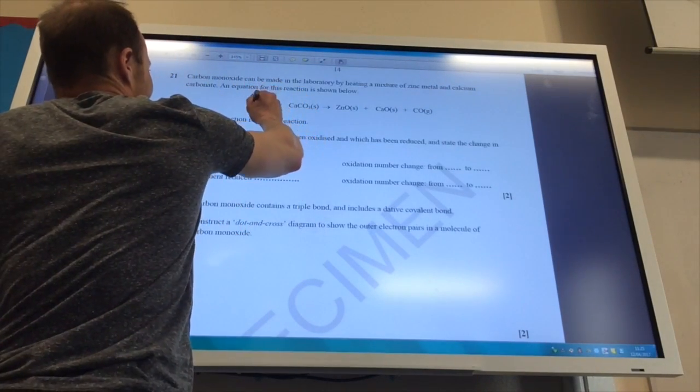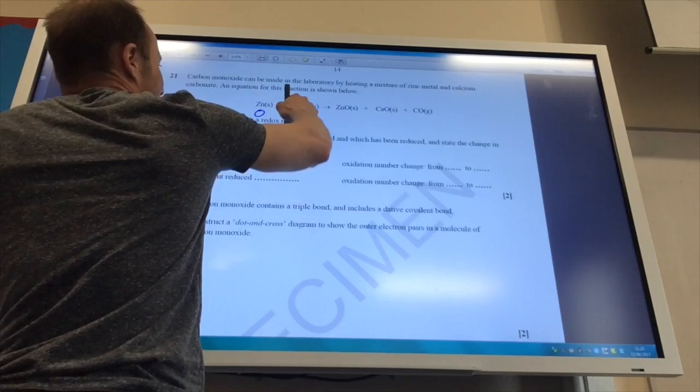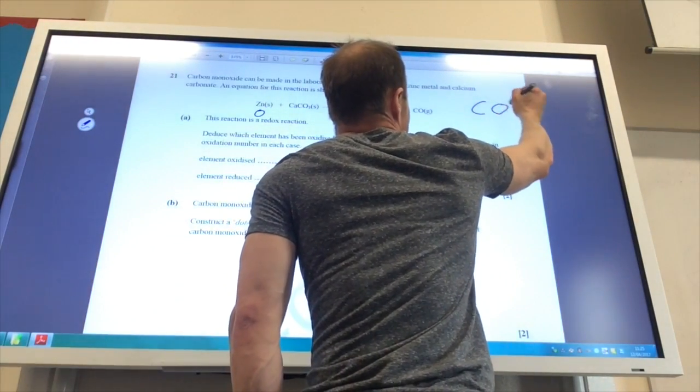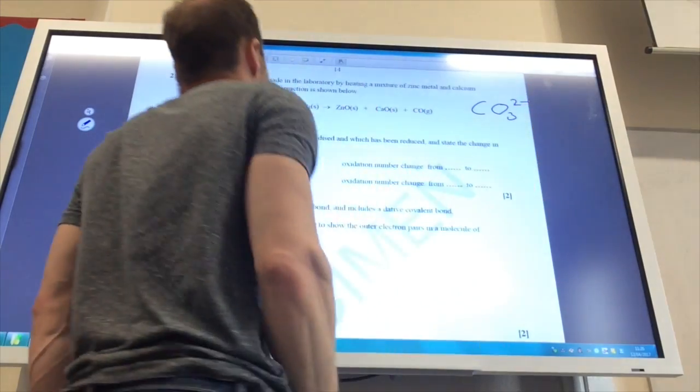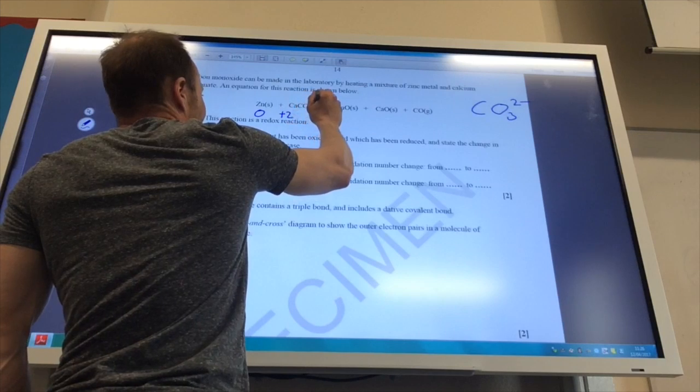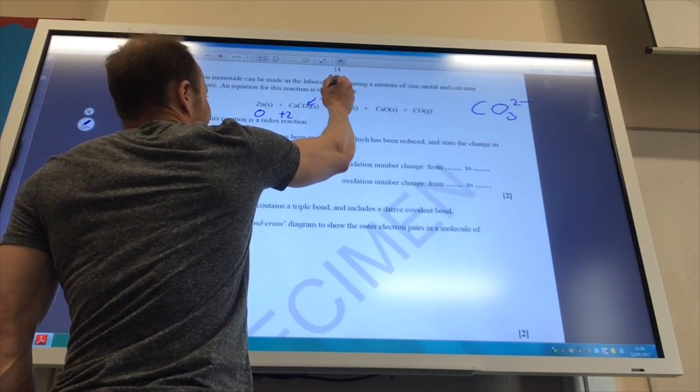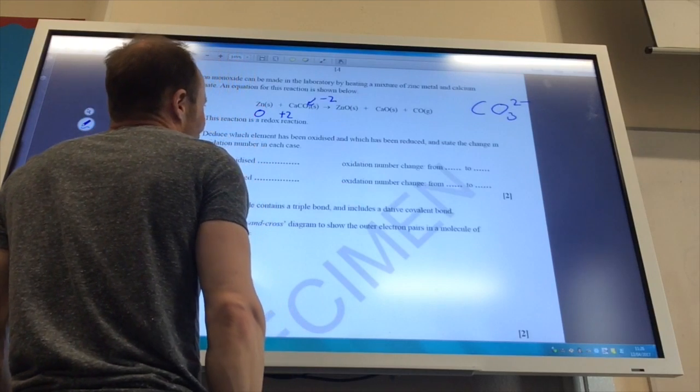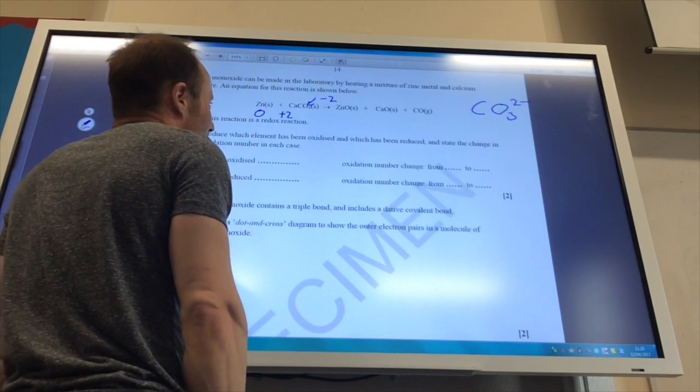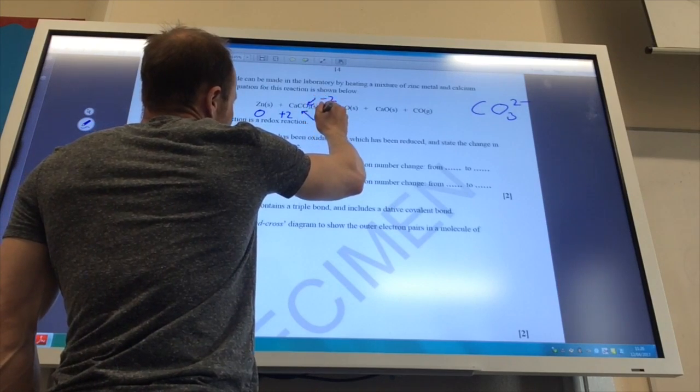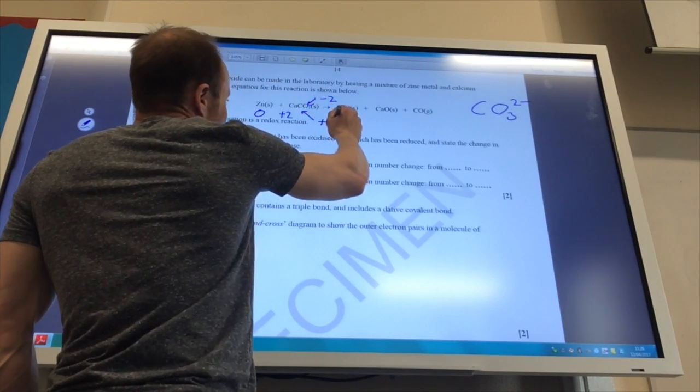Zinc is an element here, so it's going to be zero. Calcium carbonate, so remember the carbonate ion is CO3 2-. Calcium in group 2 has got to be +2. Oxygen is always, well, pretty much always -2, unless it's in a peroxide or bonded to fluorine. So that means that carbon is going to be +4.